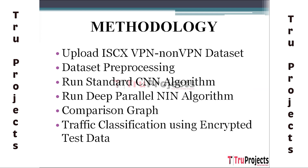The third module is running the standard CNN algorithm. A convolutional neural network (CNN) model is utilized to classify network traffic into different categories such as VPN and non-VPN. CNNs are particularly effective for tasks involving spatial data like images or, in this case, network traffic packets. The standard CNN is trained on the pre-processed dataset to learn patterns that differentiate between different types of encrypted network traffic.